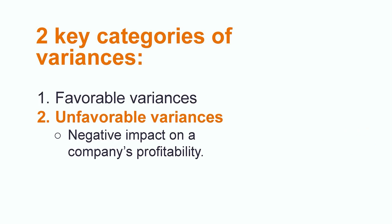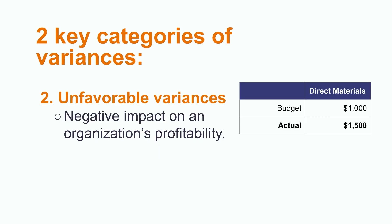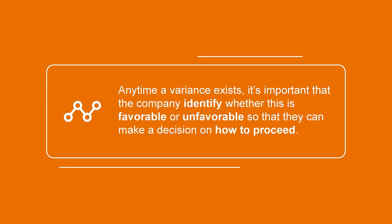Unfavorable variances occur in the opposite circumstance, when the result has a negative impact on the company's profitability. Let's go back to the previous example where the company budgeted to spend $1,000 on direct materials. If something didn't go to plan and they ended up spending $1,500 that month, they would end up with a $500 unfavorable variance. Anytime a variance exists, it's important that the company identify whether this is favorable or unfavorable so that they can make a decision on how to proceed.